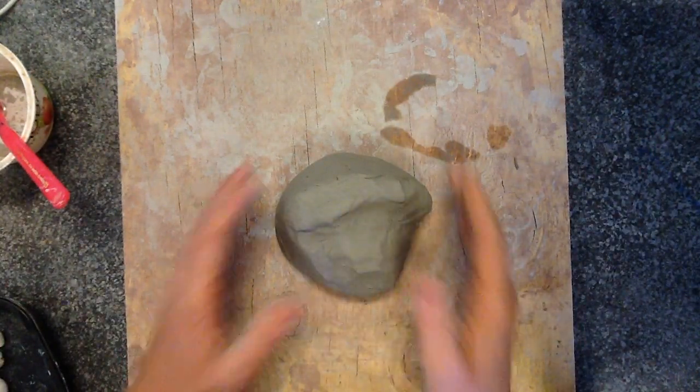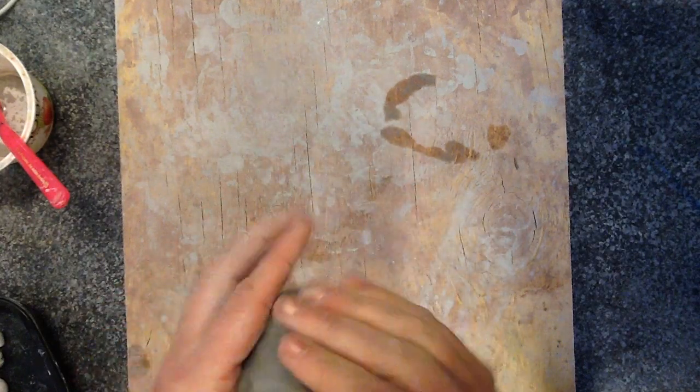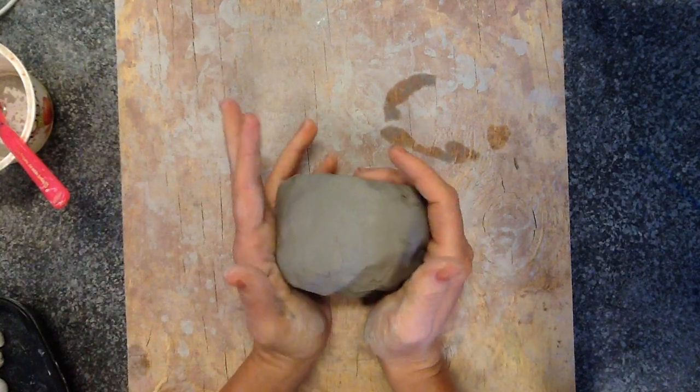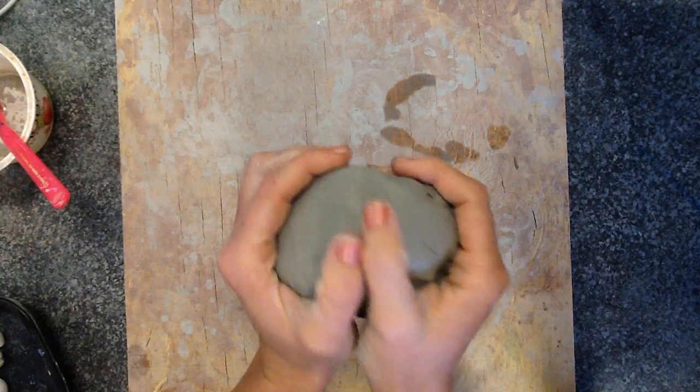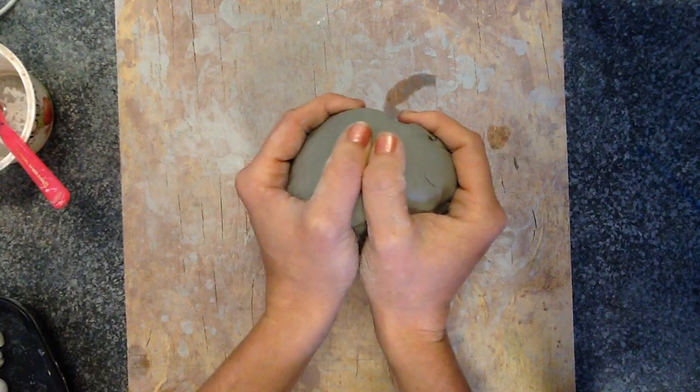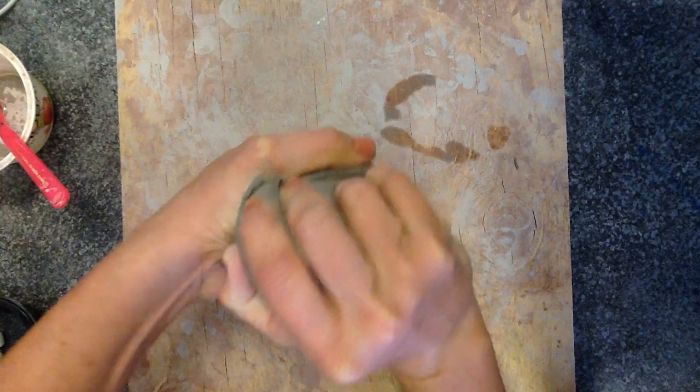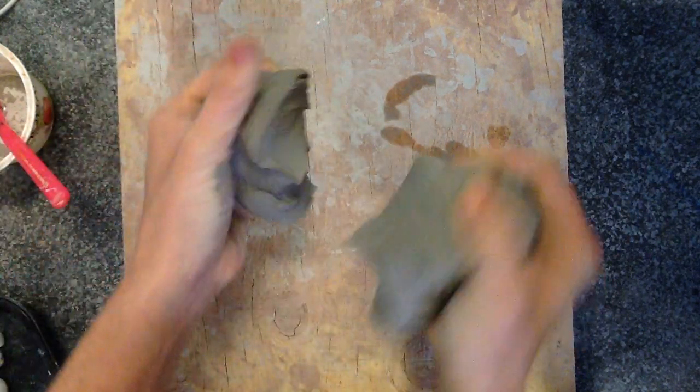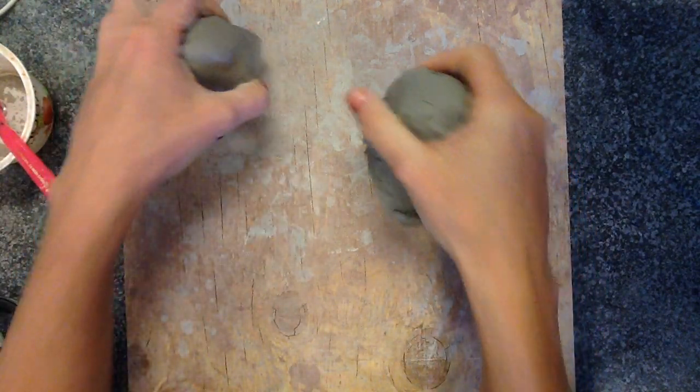I have a big bunch of clay here, and the first thing I need to do is separate it into two equal parts. So, I'm just going to take it in the middle and kind of twist it and pull it. There you go. Two equal parts.